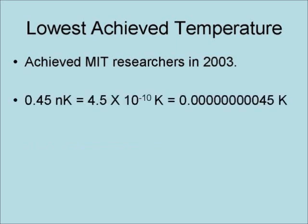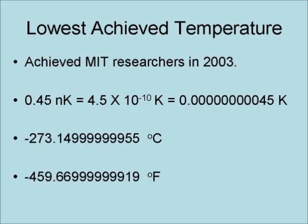The lowest temperature ever achieved was achieved by MIT researchers in 2003. That temperature was 0.45 nanoKelvin, which is 45 ten-billionths of a Kelvin, or 45 ten-billionths of a degree Celsius above absolute zero. Here is the same temperature in Celsius and Fahrenheit respectively.